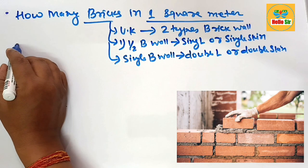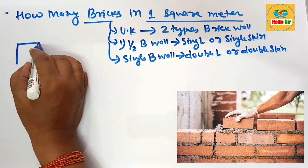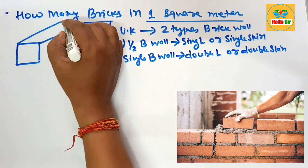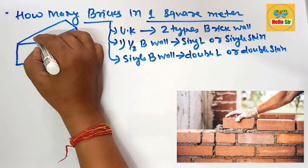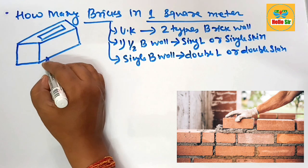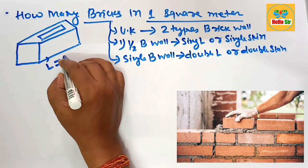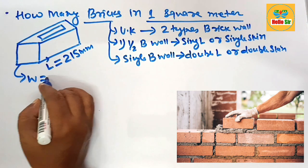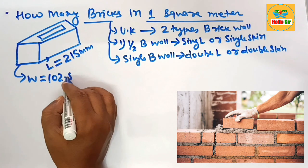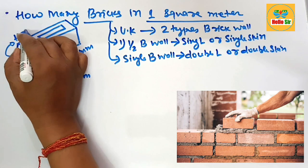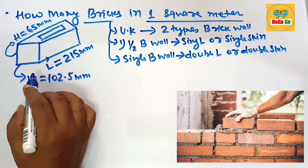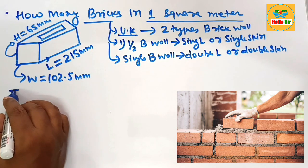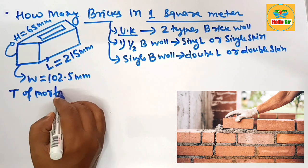Now let's look at the dimensions of a brick as per UK practices. The actual length of a brick is 215 mm. The width is 102.5 mm and the height of the brick is 65 mm. These are the actual dimensions of a brick as per UK practices. The thickness of the mortar joint between bricks is 10 mm.